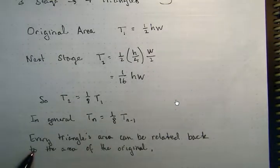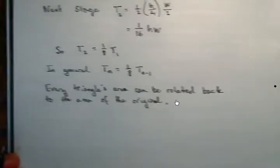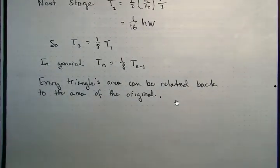So if you trace that back, you can go all the way back to the original triangle. So you can write the area of any of the triangles in terms of the area of the first triangle. You just need to add the correct number of factors of one eighth. So let's look at what the total area would be.